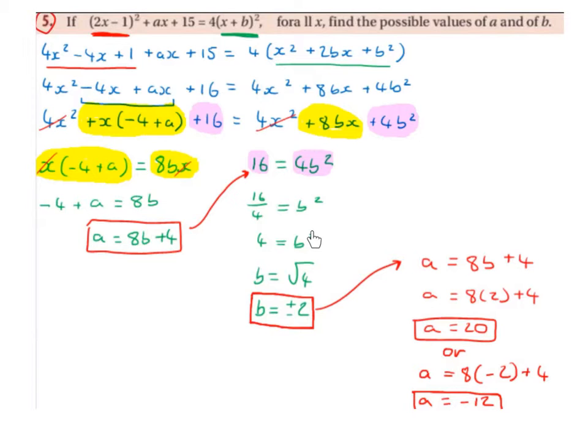So then the squared is going to come over the equal sign and become square root. So we get b equals the square root of 4, and the square root of 4 is plus or minus 2.